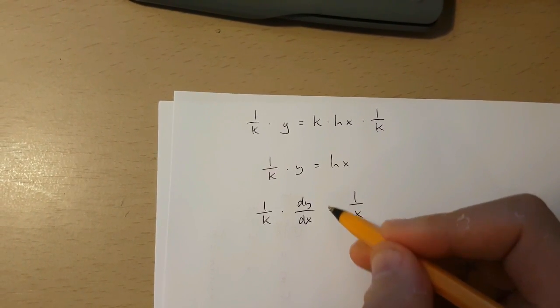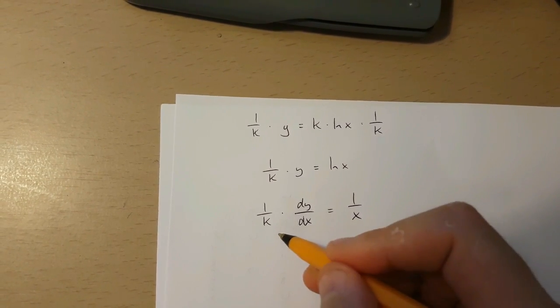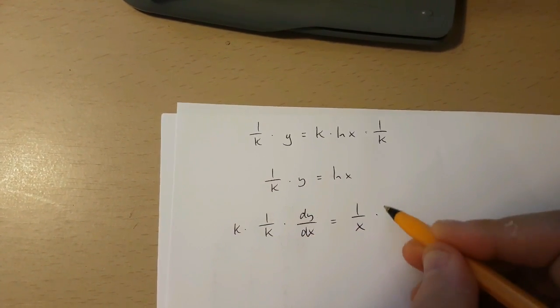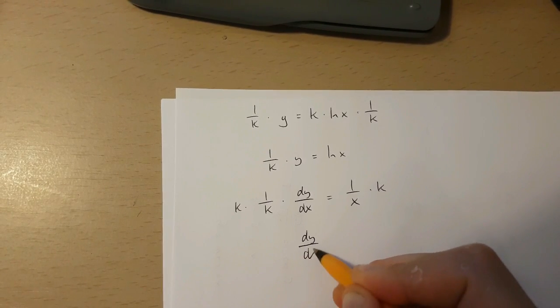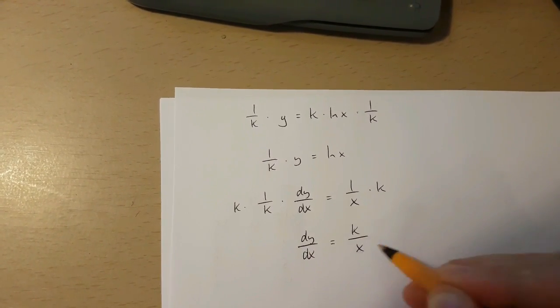So to isolate dy over dx, all I have to do is multiply both sides of this equation by k. If I do this, I get dy over dx is equal to k over x.